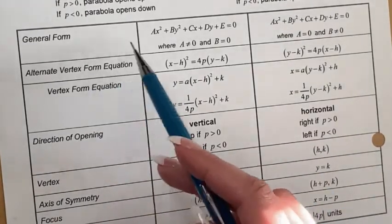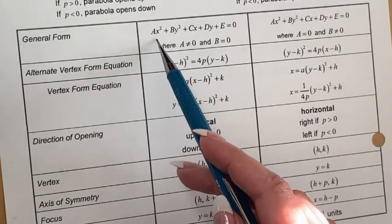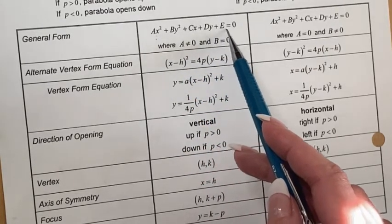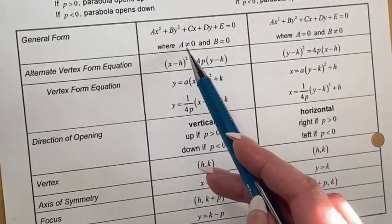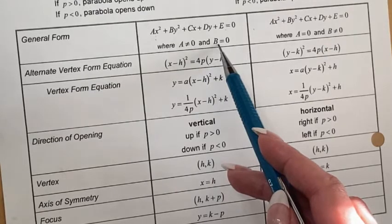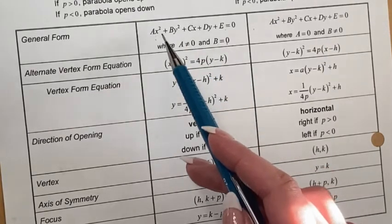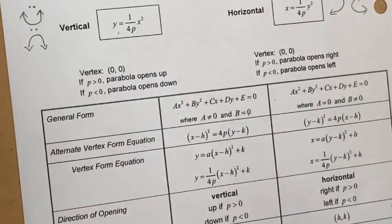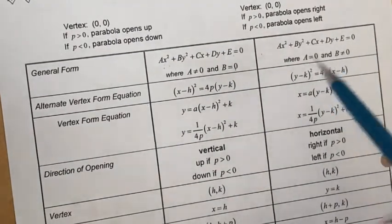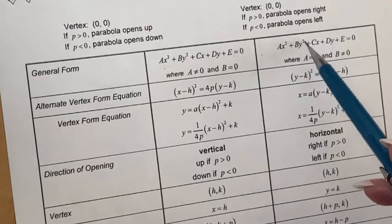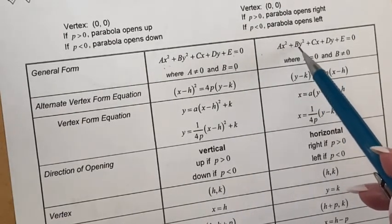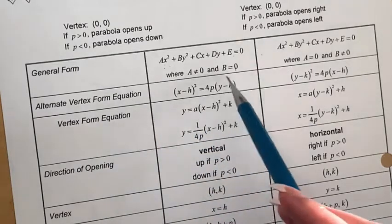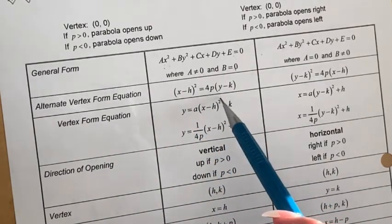Some pointers we'll use going forward: the general form of a parabola equation is ax² + by² + cx + dy + e = 0, where a ≠ 0 and b = 0 for a vertical parabola (opening up/down), or a = 0 and b ≠ 0 for a horizontal parabola (opening left/right).